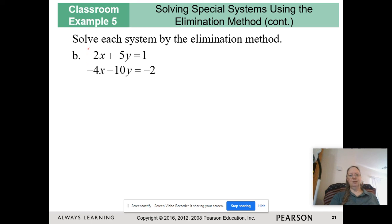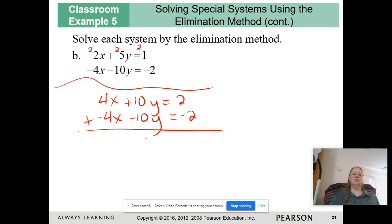Same idea. I think I'm going to multiply this one by 2. So, I have 4x plus 10y. And, I'm going to add them together. And, this time, everything cancels. And, I have 0 is equal to 0, which is true. So, this is where we end up having infinitely many solutions.